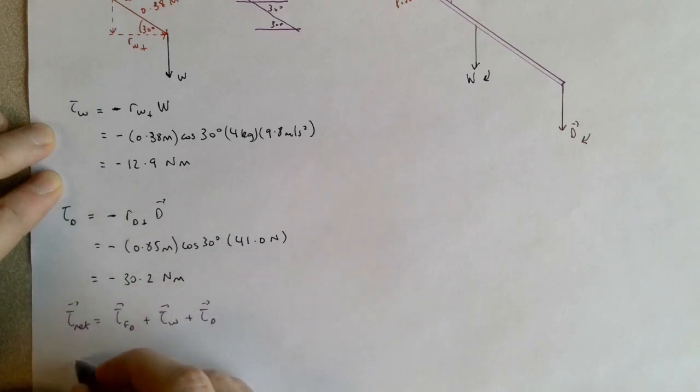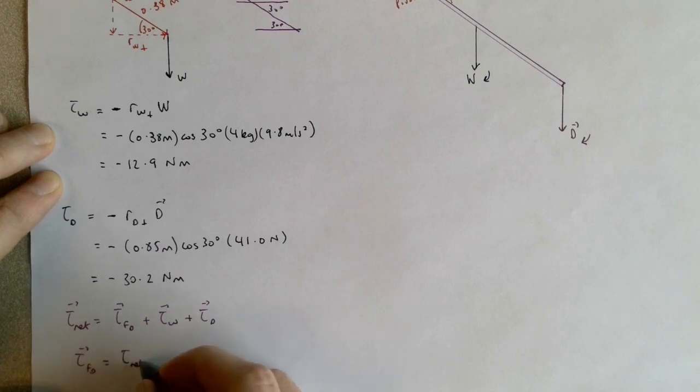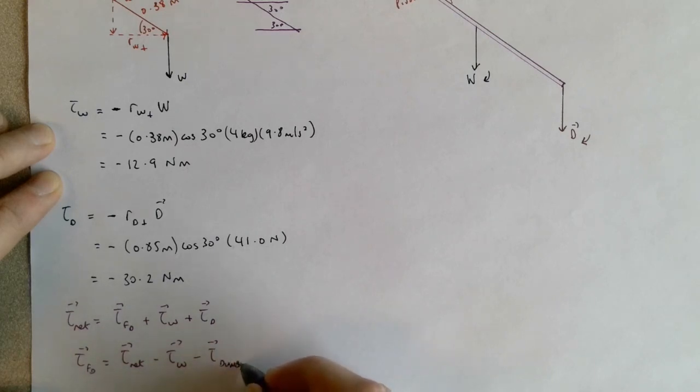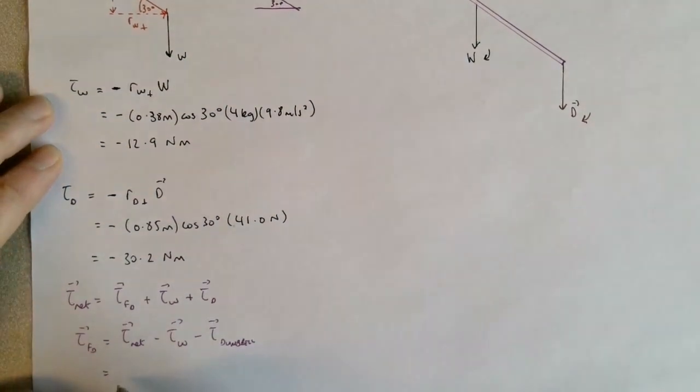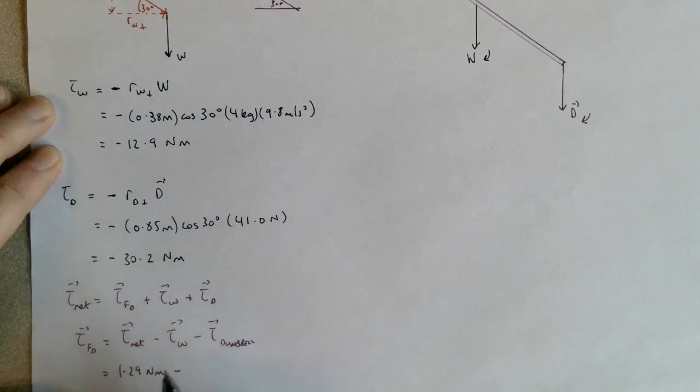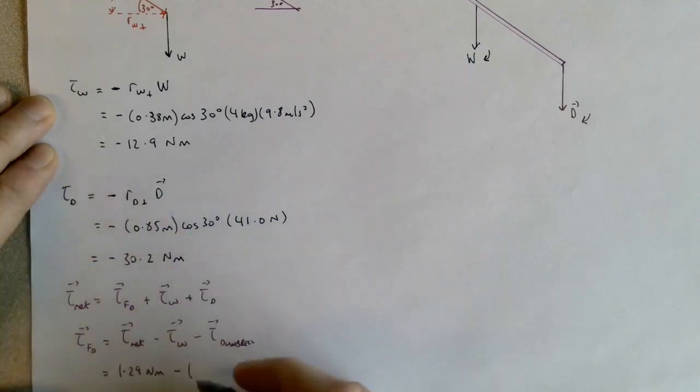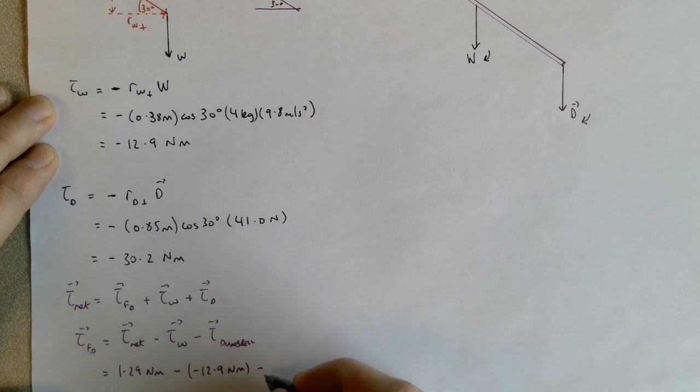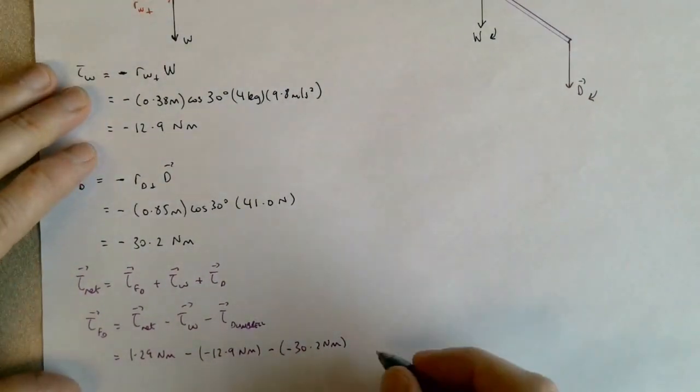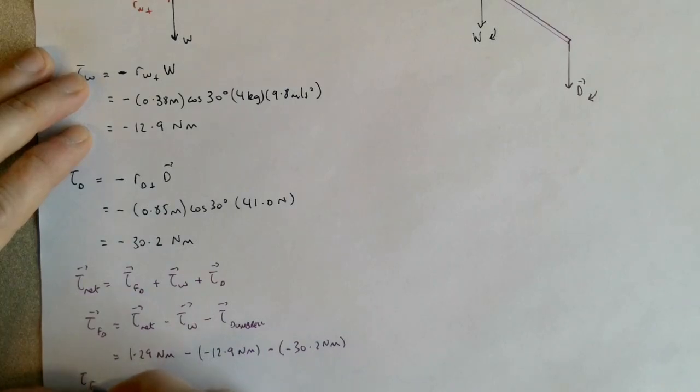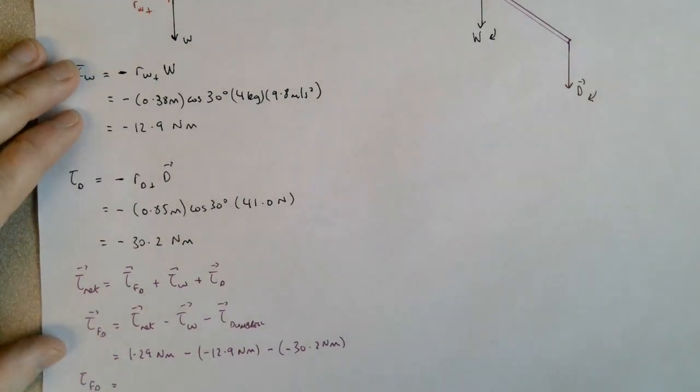Okay, so we know that the net torque is a vector sum. It's torque of FD, torque weight plus torque dumbbell. So if I'm solving for the torque of the deltoid, that's the net torque minus torque weight minus torque dumbbell. We know this from the previous page is 1.29 Newton meters minus, and this is where you have to be careful with your signs. These are vector quantities, so I'm going to take into account their sign when I'm summing them. This is minus times a negative torque, minus negative 12.9, minus negative 30.2 Newton meters. And if you put all this together, the torque of the deltoid is 44.3 Newton meters.